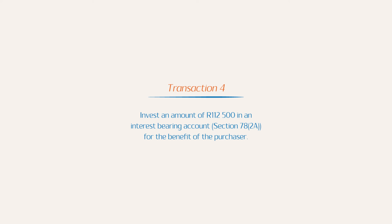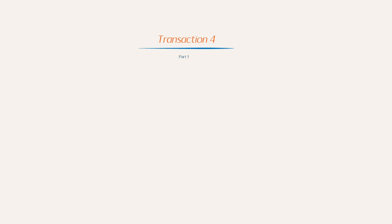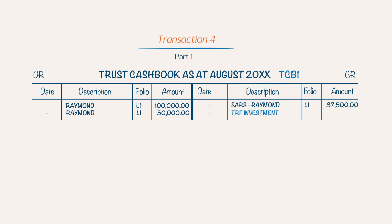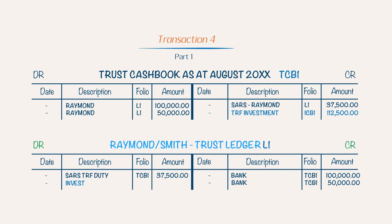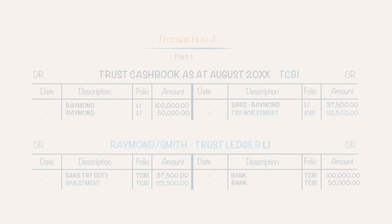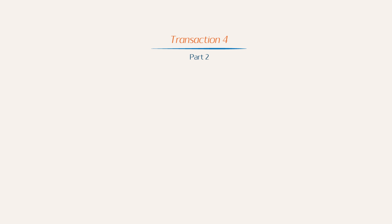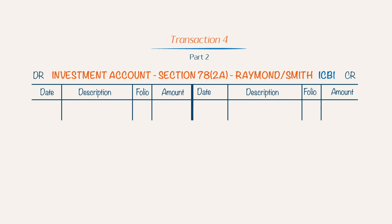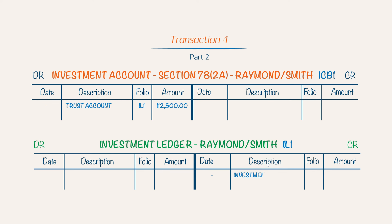Transaction 4: You invest an amount of R112,500 in an interest-bearing Section 78.2(A) account for the benefit of the purchaser. This transaction is recorded in two parts. For Part 1, you credit the trust cash book with R112,500 — description: transferred to investment account — and debit the trust ledger account of Raymond/Smith. For Part 2, you open an investment account with the bank, debit the investment account, and credit the investment ledger account of Raymond/Smith.